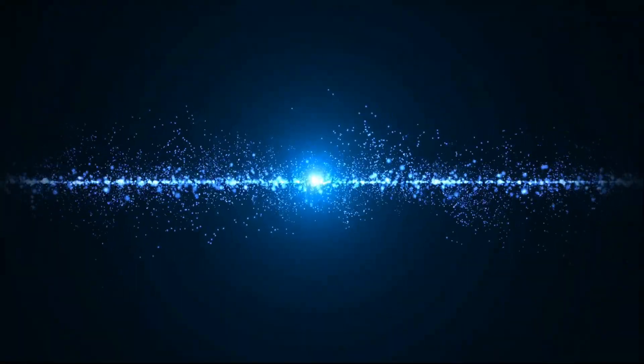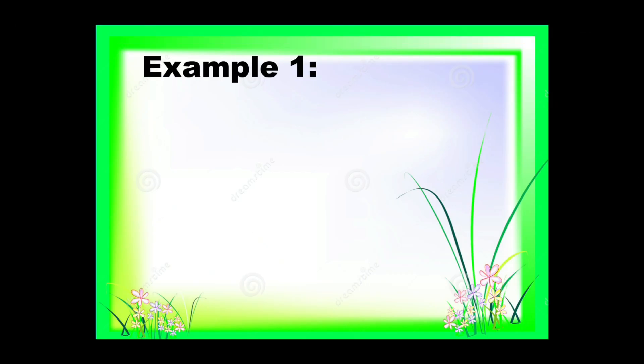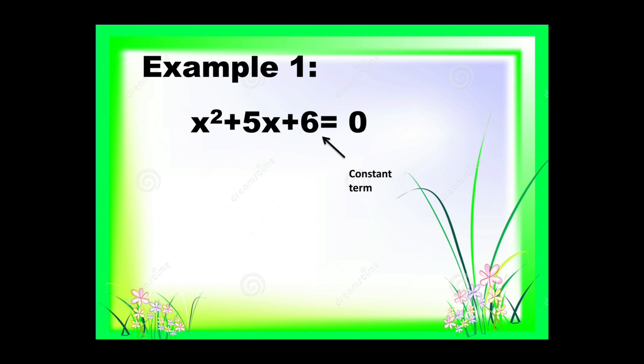Now that we already know how to get the factors of numbers, we can now solve the roots of quadratic equations by factoring. Example number 1: x squared plus 5x plus 6 is equal to 0. In order to solve this quadratic equation, we need to get the factors of 6, or simply, the constant term.